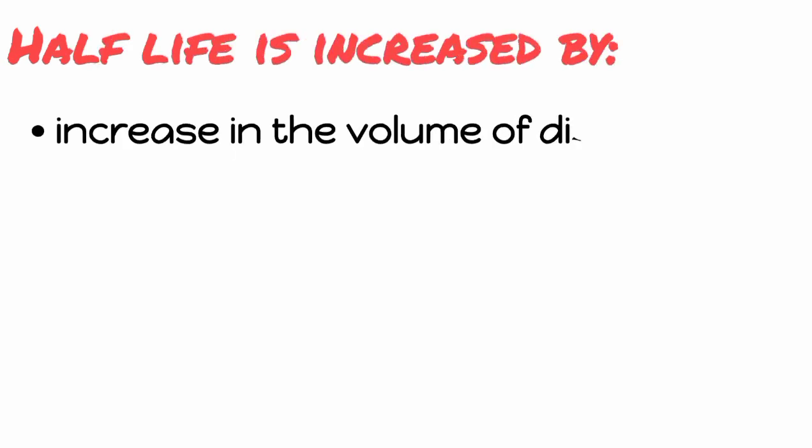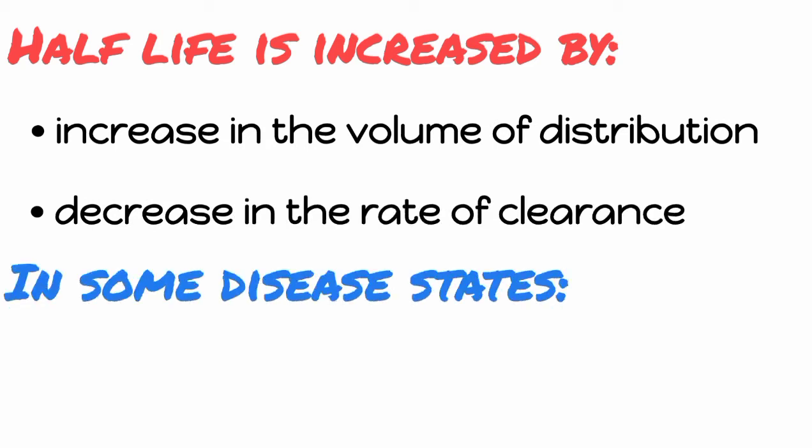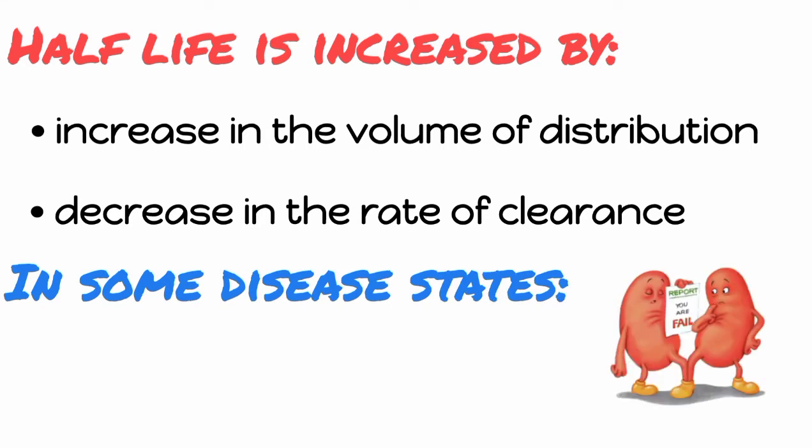Half-life is increased by increase in volume of distribution and by decrease in rate of clearance. But in some disease states like renal failure, the volume of distribution increases but the clearance decreases, resulting in an unchanged half-life.